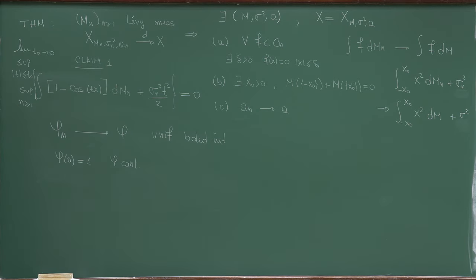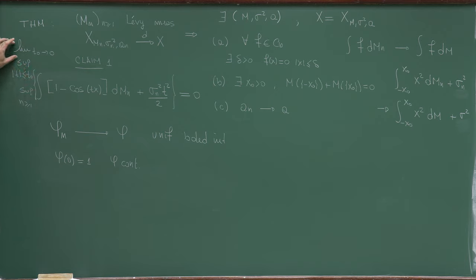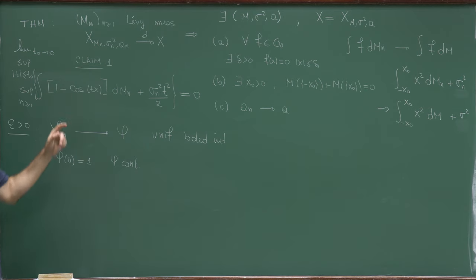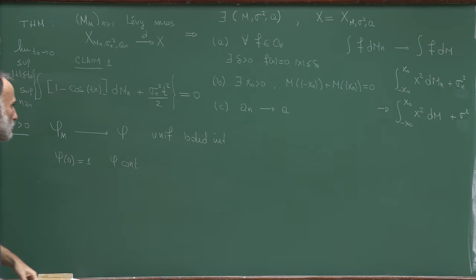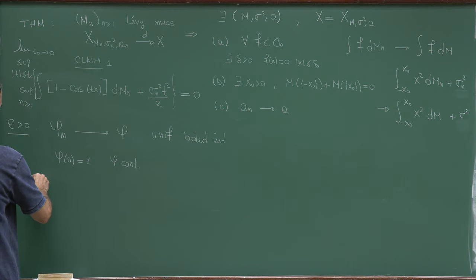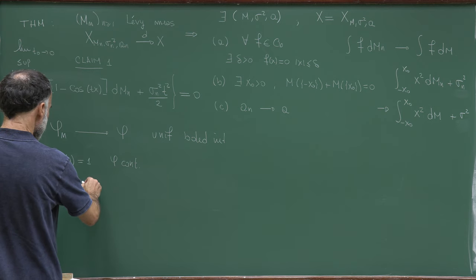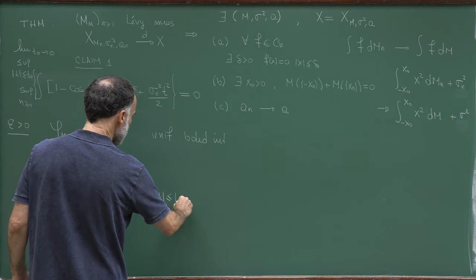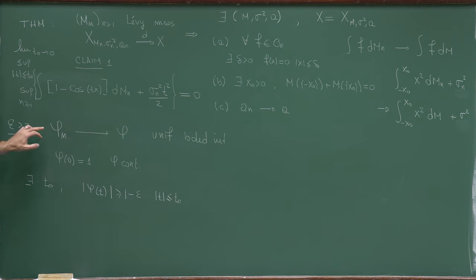Let me prove this claim. I want to prove that this limit of the supremum over all t bounded by t0, of the supremum over n of this quantity, equals 0. Fix ε>0. Since the characteristic functions converge uniformly over bounded intervals, and φ is a characteristic function equal to 1 at 0 and continuous, I can find some t0 such that |φ(t)| > 1-ε for all t with |t|≤t0.